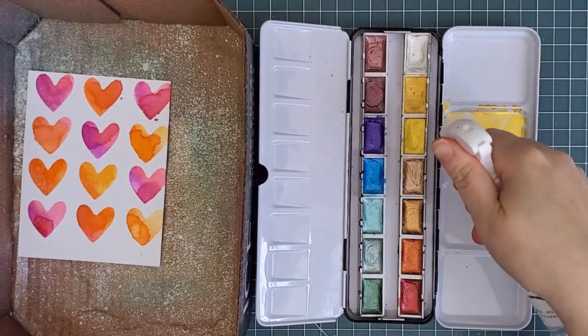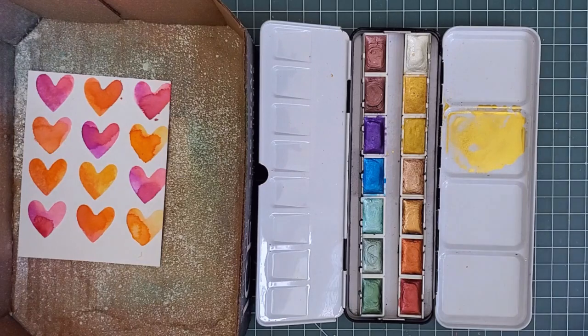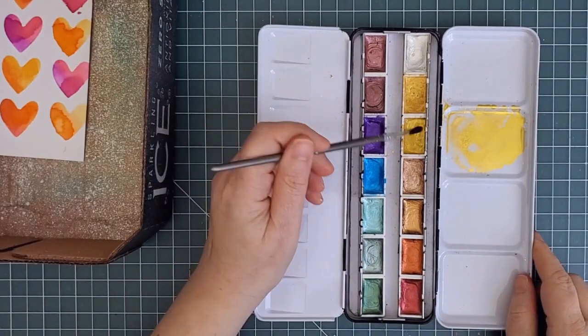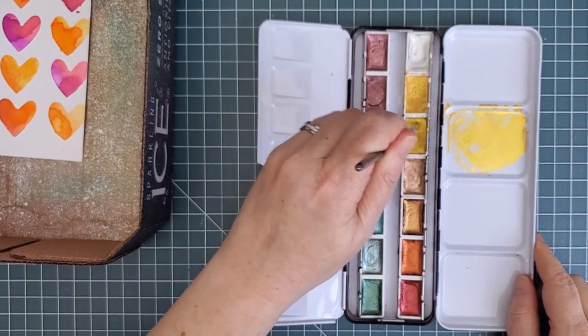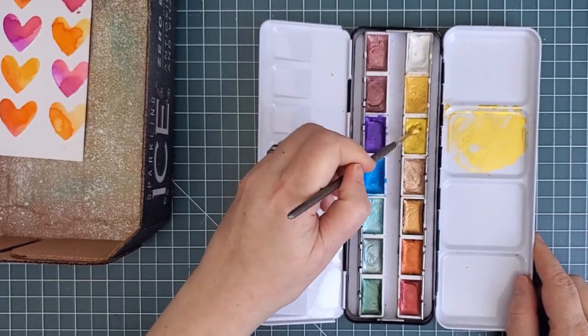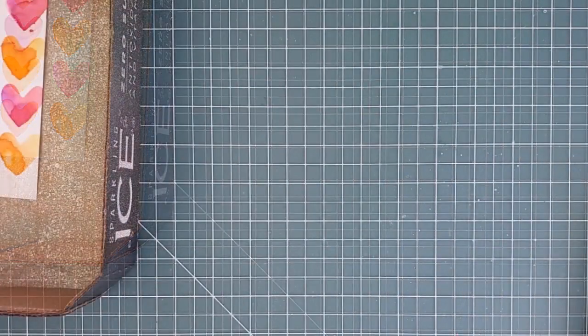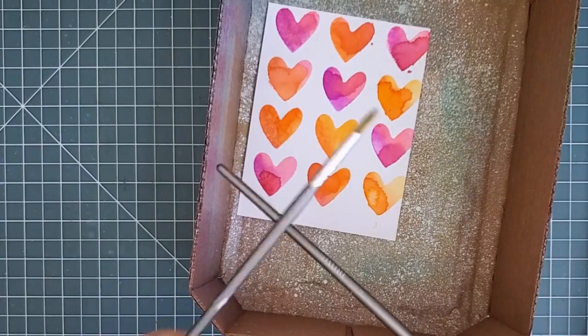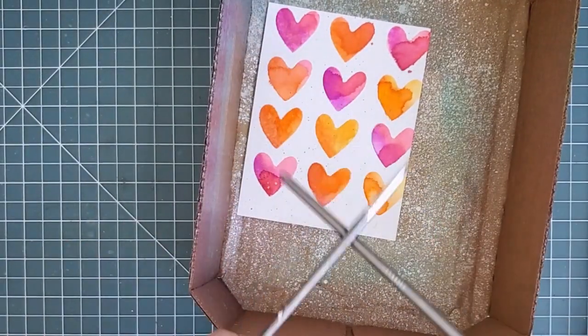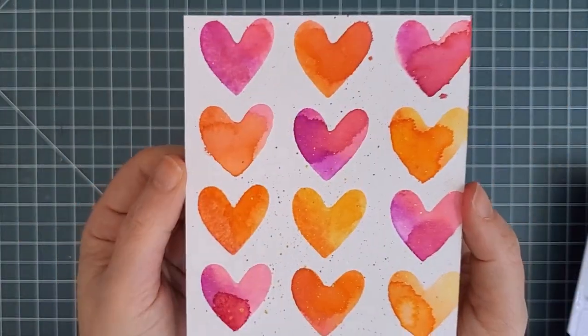Next I thought it would be fun to add some gold splatter, so I got out my Altenew metallic watercolors and I spritzed some water into one of the gold shades to activate it. I loaded my brush with the pigment and then used another brush to tap on and create some splatter. My drops were all very small and fine, and it added a subtle shine to the cardstock.